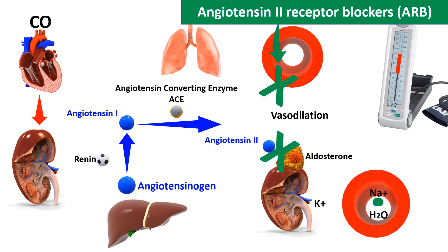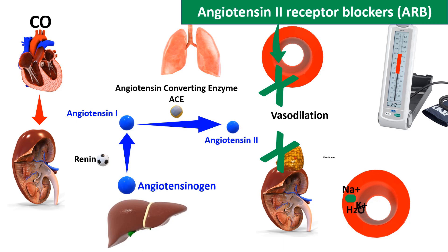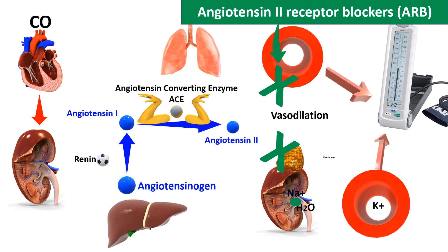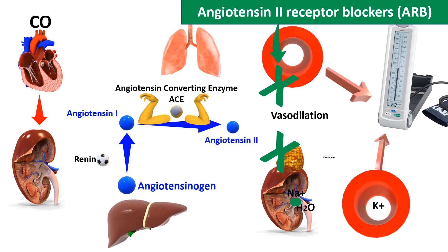Similarly, angiotensin 2 will not be able to stimulate the secretion of aldosterone from the adrenal cortex. As a result, more sodium and water will be excreted from circulation into the urine. Both vasodilation and decreased blood volume will decrease the elevated blood pressure. Most importantly, angiotensin converting enzyme will not be inhibited and will keep working as usual, so bradykinin levels will not increase.